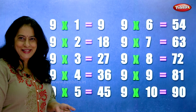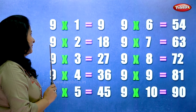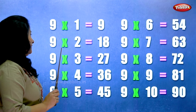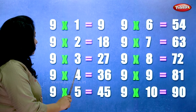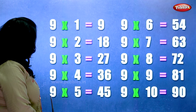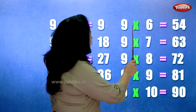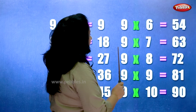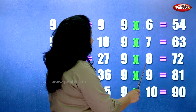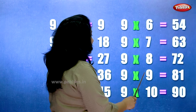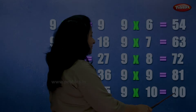Let's learn the table of nine one more time. Nine ones are nine. Nine twos are eighteen. Nine threes are twenty-seven. Nine fours are thirty-six. Nine fives are forty-five. Nine sixes are fifty-four. Nine sevens are sixty-three. Nine eights are seventy-two. Nine nines are eighty-one. Nine tens are ninety.